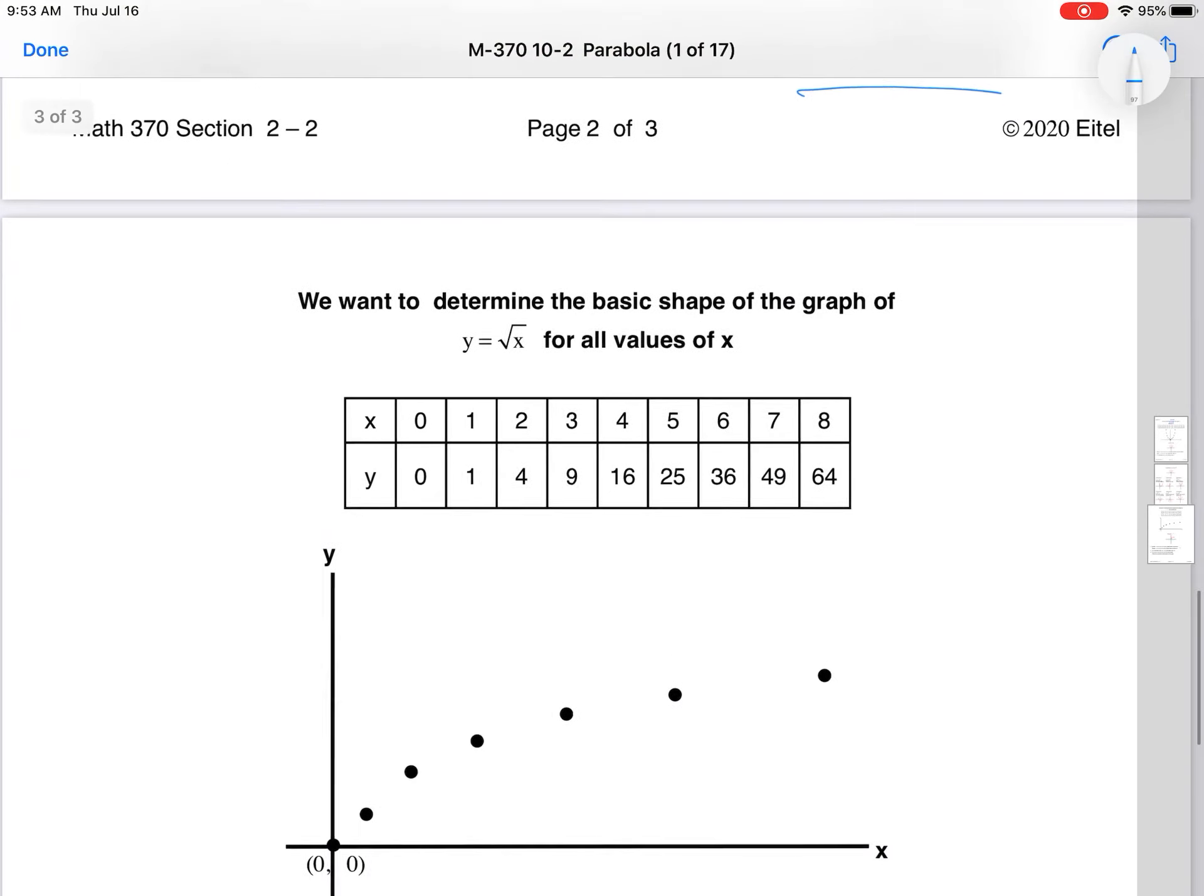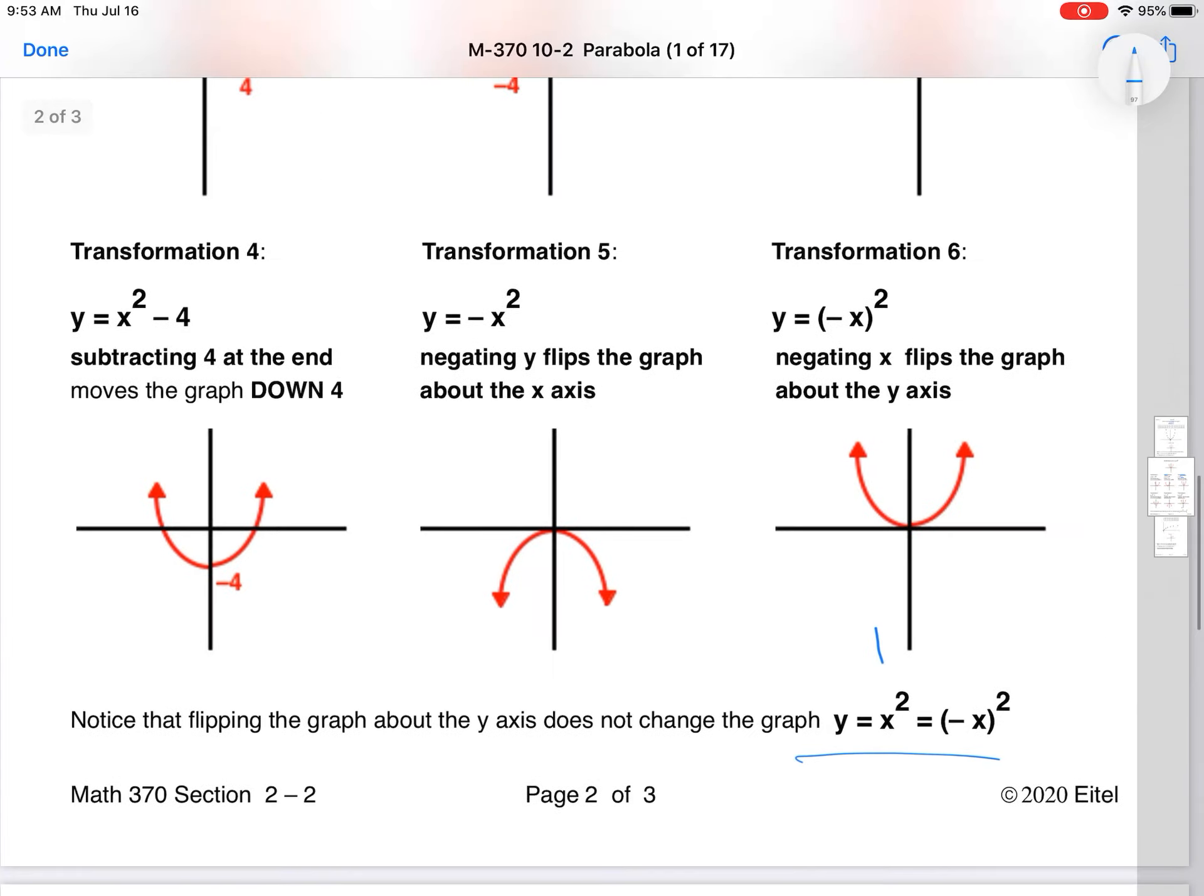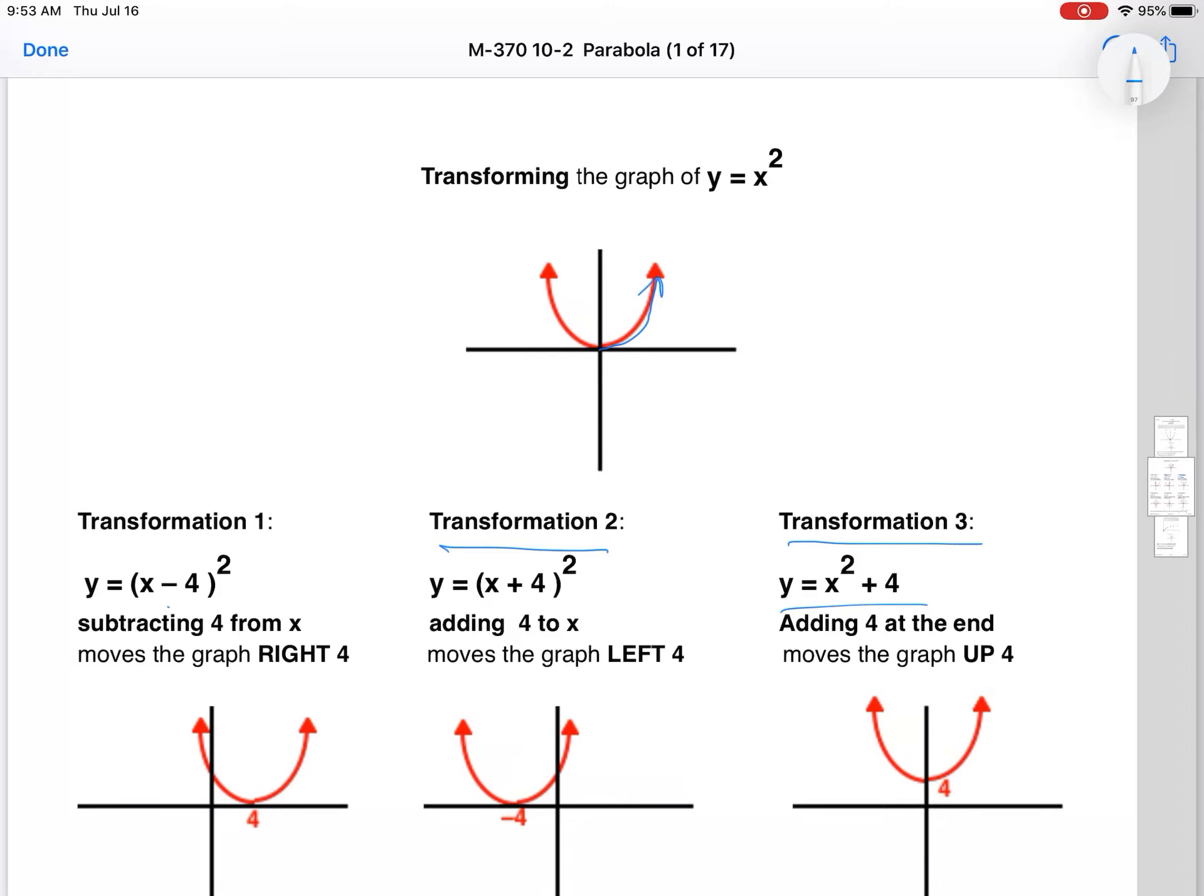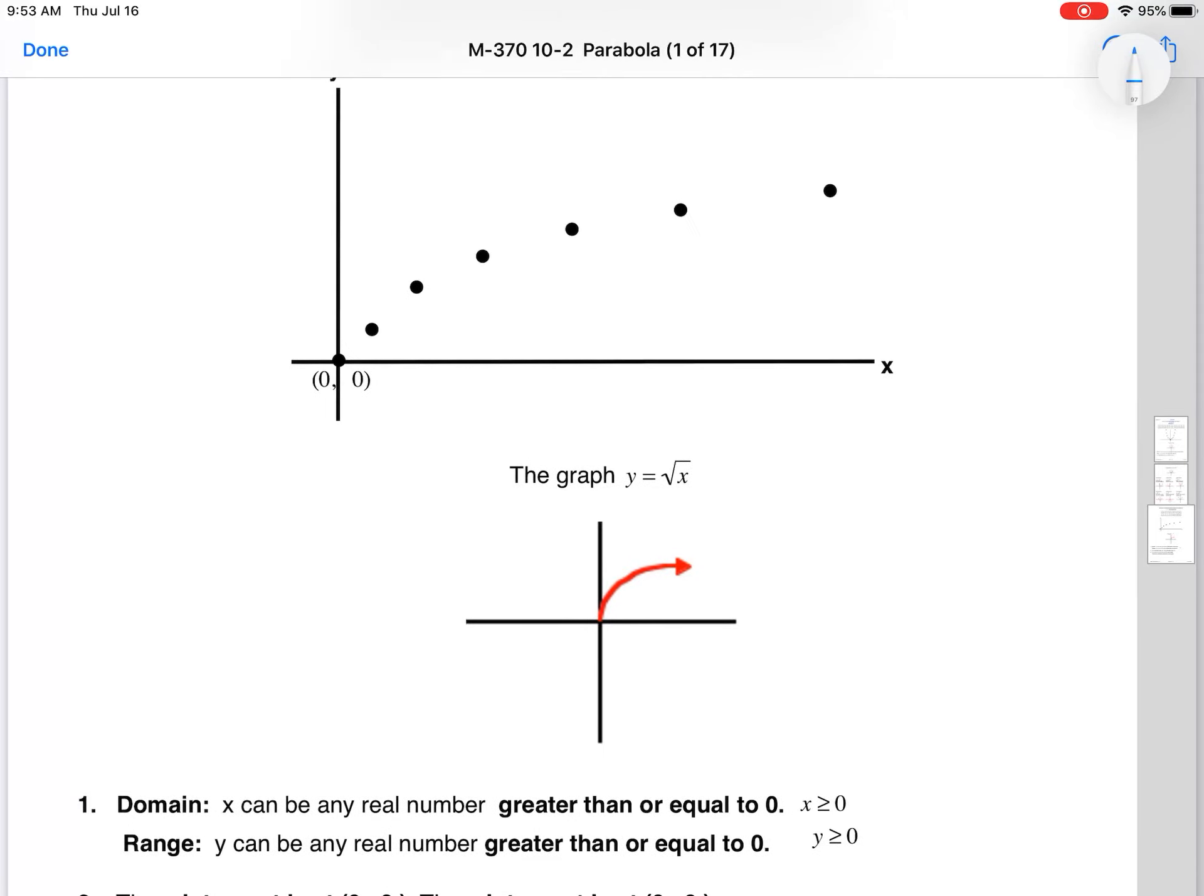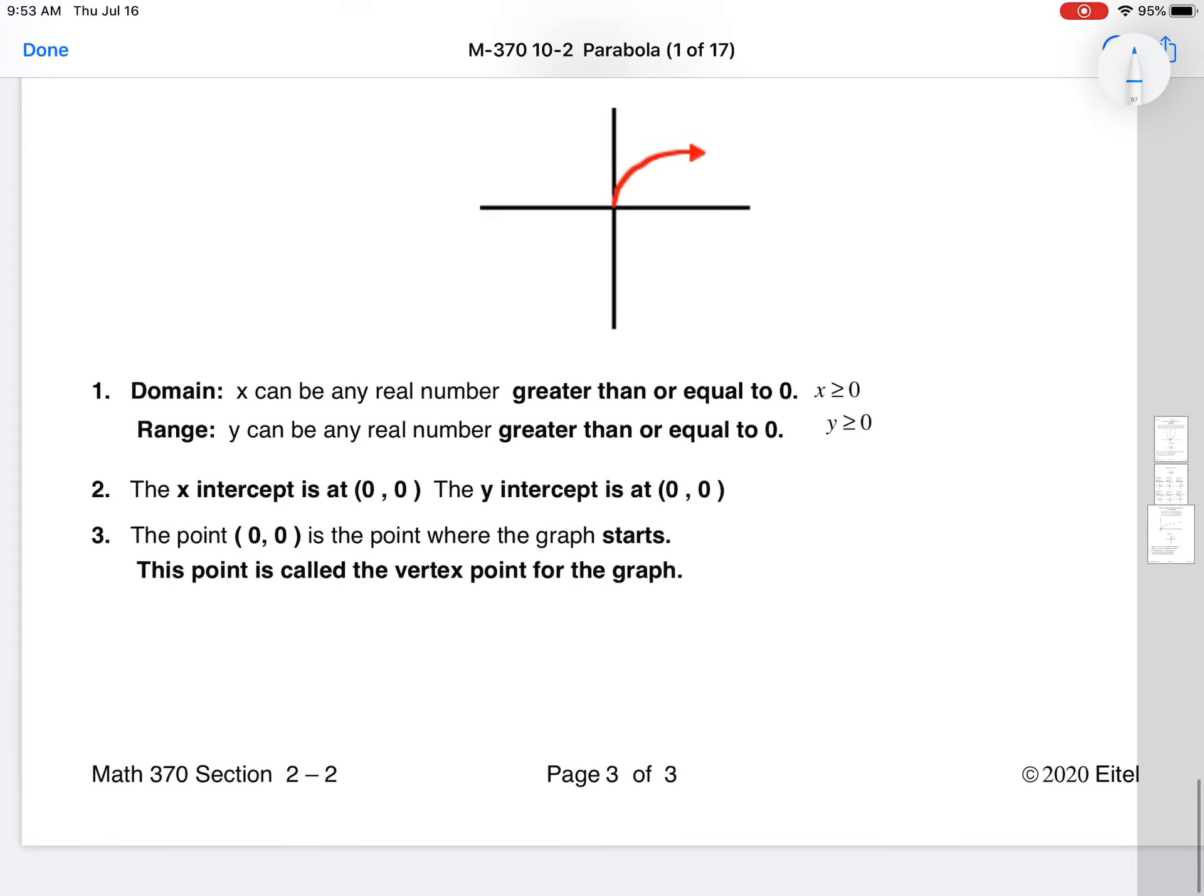We're also going to throw in the square root function, which is the inverse function, kind of. Notice that its domain is all the positive real numbers and zero, so all the non-negative numbers. It is the inverse of just this right-hand side of the x squared graph. Just to bring up inverse functions again. So there's the graph of it. Its domain is any number greater than or equal to zero, and its range is all the y values greater than or equal to zero.